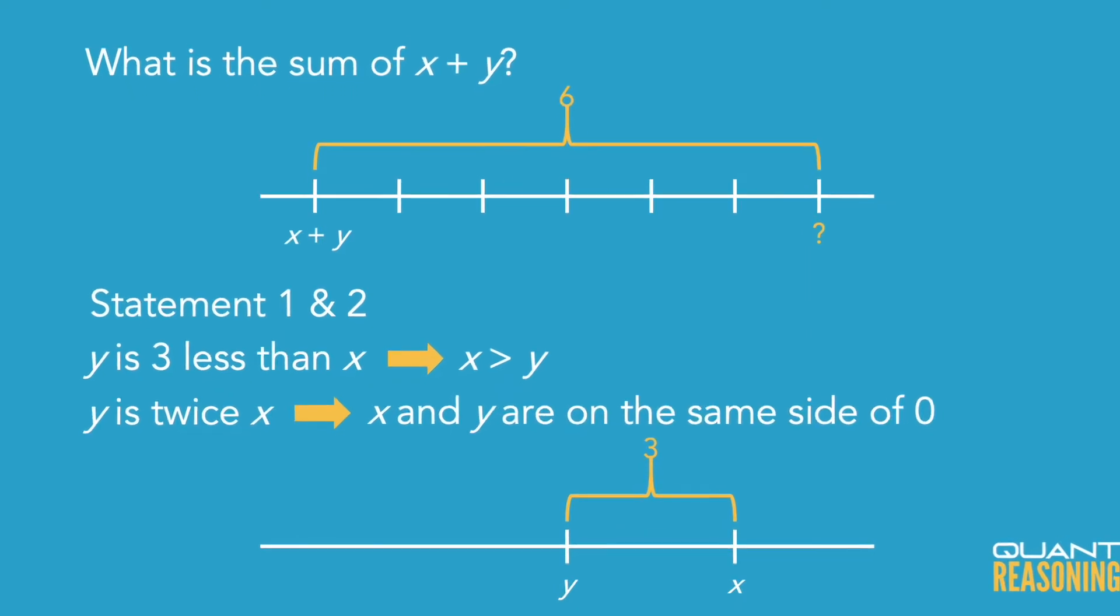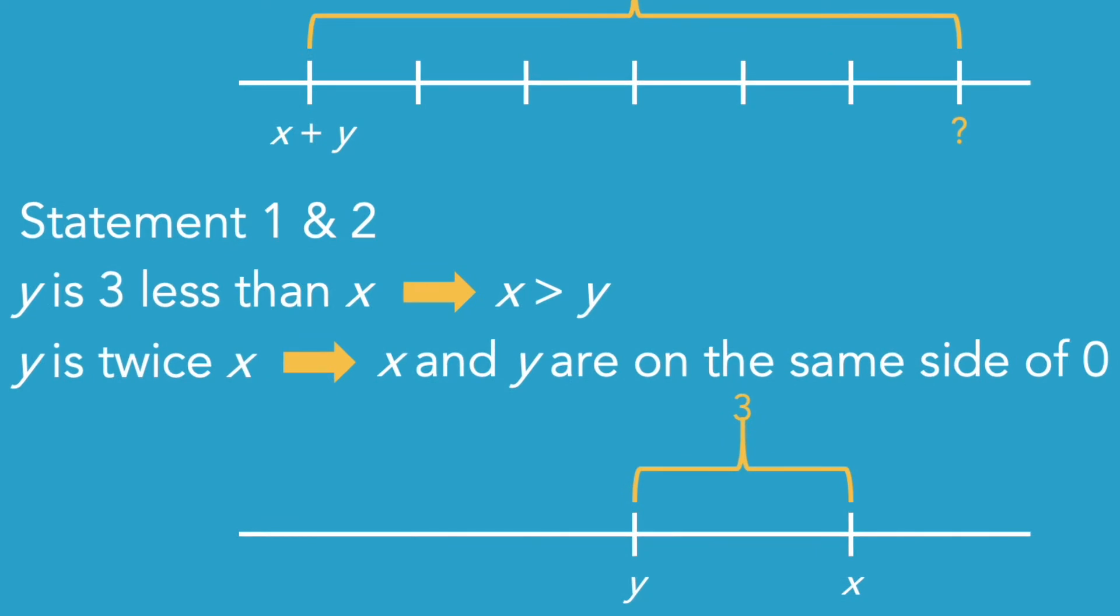And it's a bit tricky because if we truly only knew the difference between the numbers without knowing which one is bigger and which one is smaller, that actually would not be sufficient to infer their sum because we wouldn't know which side of zero the numbers are on.